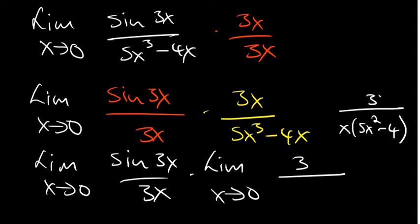And then on top, you've got 3x. So the x can divide, so you have 3 over 5x squared minus 4 remaining.